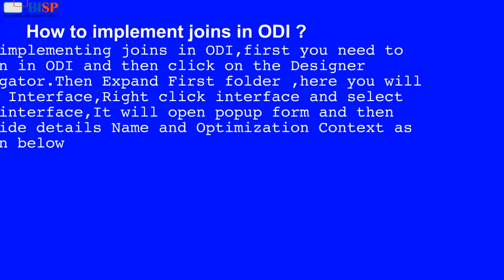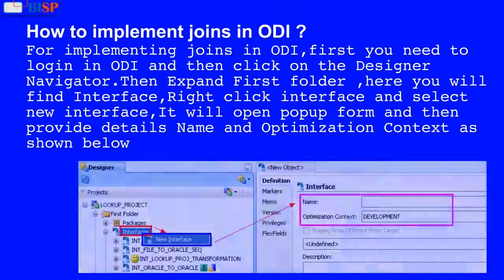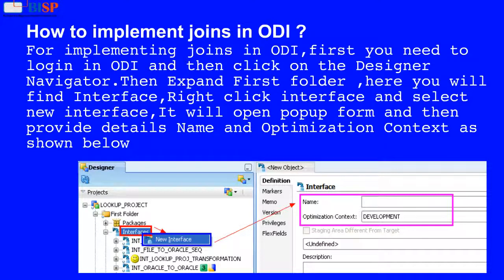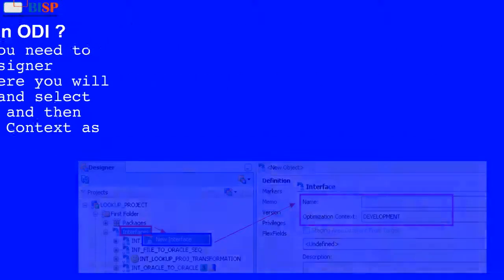How to implement join in ODI? For implementing joins in ODI, first you need to login in ODI and then click on the designer navigator. Then expand the first folder, here you will find interface. Right click interface and select new interface. It will open a popup form and then provide details — name and optimization context as shown below.